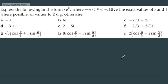We're asked to express the following in the form r·e^(iθ), where θ is between negative and positive π, to give the exact values of r and θ where possible, or values to two decimal places otherwise.